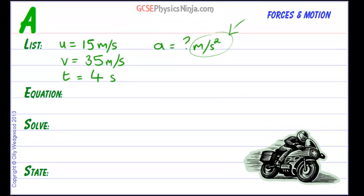Let's quote the equation. This is on your equation formula sheet. So acceleration is equal to the final velocity minus the initial velocity over the time taken.